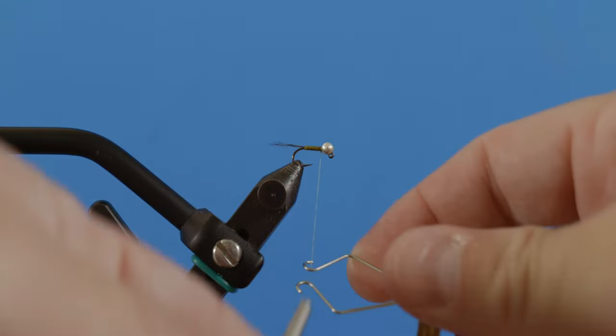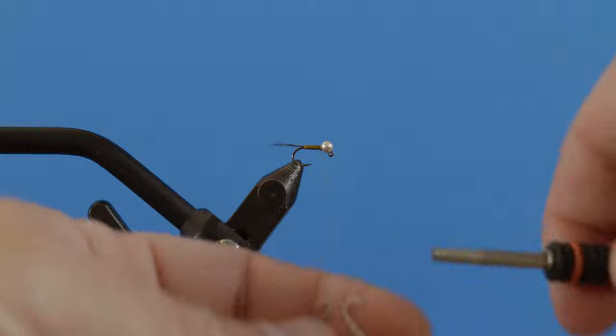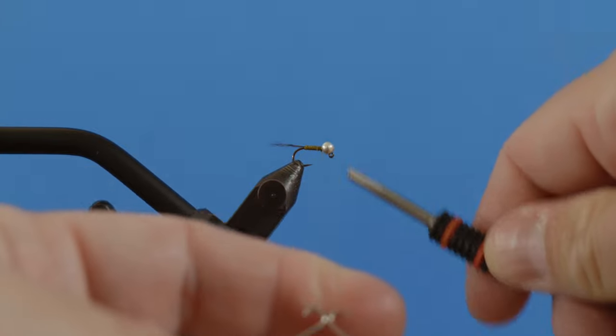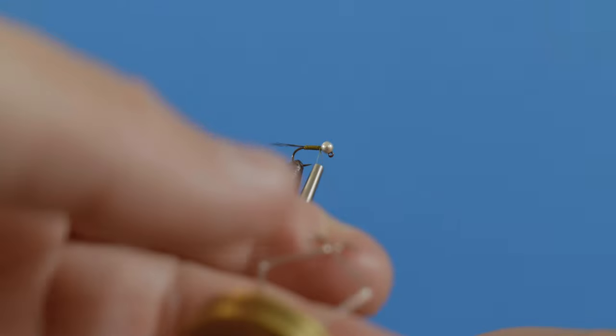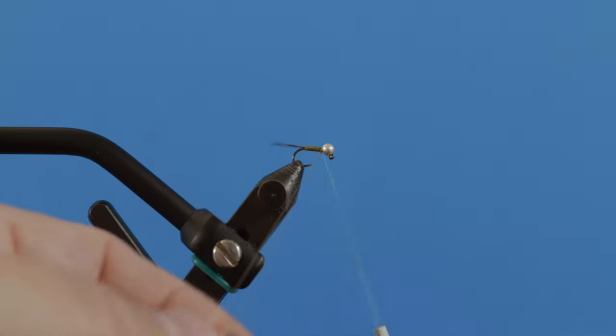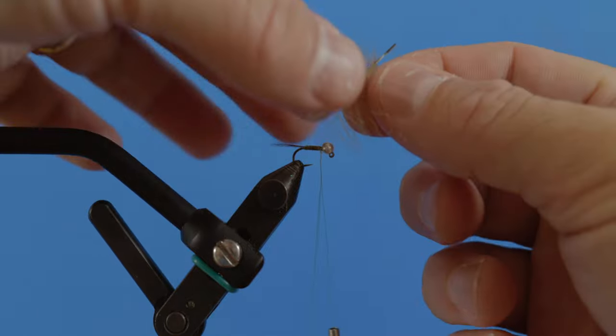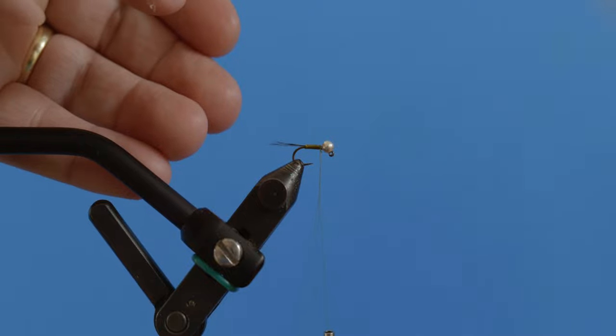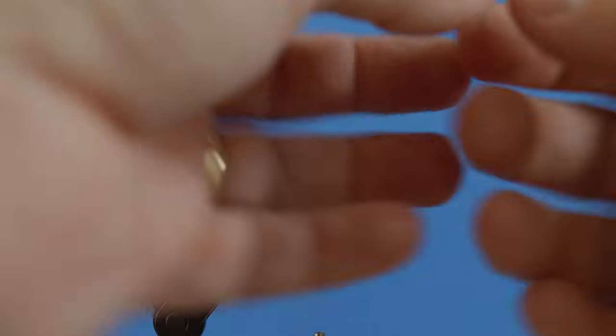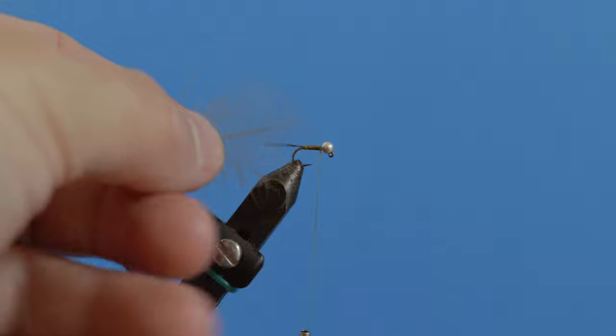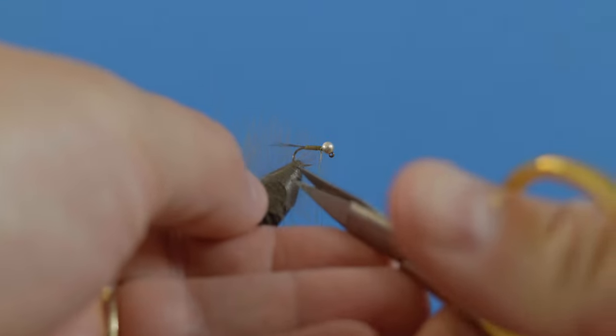So now I've secured that down there, grabbing my dubbing loop tool here. I'm going to create a loop, and we're going to add a CDC collar. This is a Calybaetis color CDC, but you could use a bunch of different colors. Come in, trim off that tip so it doesn't get in the way.